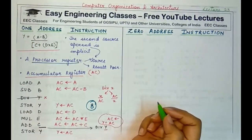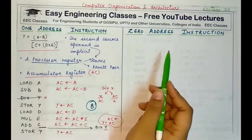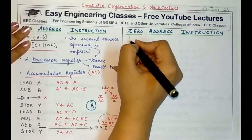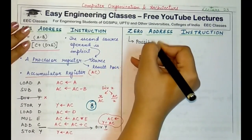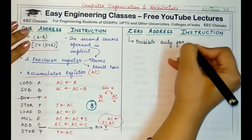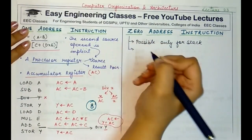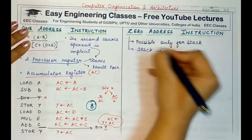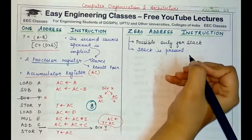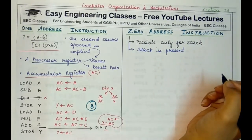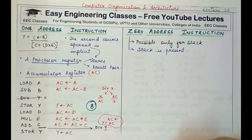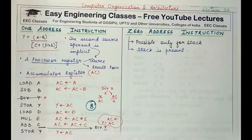Zero address instructions are generally possible only in the case of a stack. The stack is present at a known location — its starting address is known to the processor. The processor also knows what the current top of the stack contains. The top of the stack is a pointer, and that pointer contains the address of the element present at the topmost location in the stack.